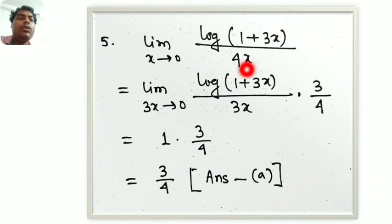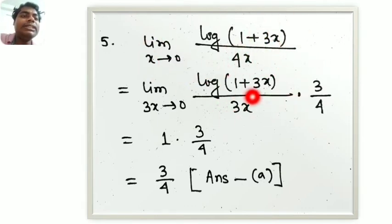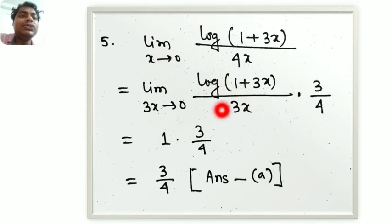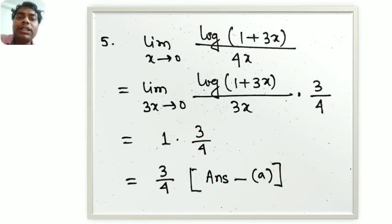Question 5: limit x tends to 0 of log(1 plus 3x) by 4x. We rewrite 3x to introduce the standard formula: limit 3x tends to 0 of log(1 plus 3x) by 3x, multiplied by 3 by 4. The limit value is 1, so 1 into 3 by 4 equals 3 by 4. The answer is 3 by 4, which is option A.